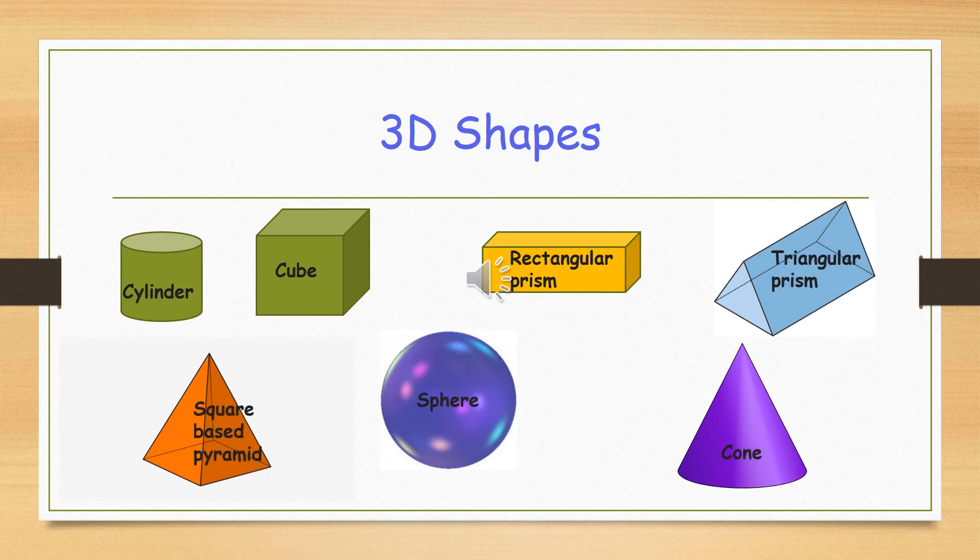All right, here are some 3D shapes. We've got the first one up is called a cylinder. The next one is a cube, rectangular prism, triangular prism. Remember, a prism is a long 3D shape.